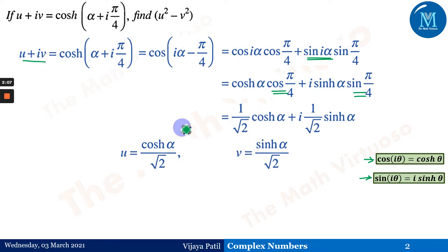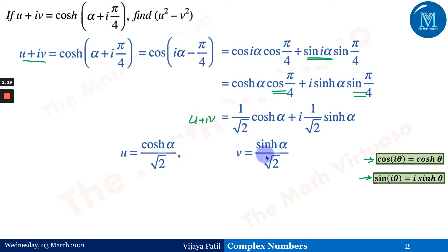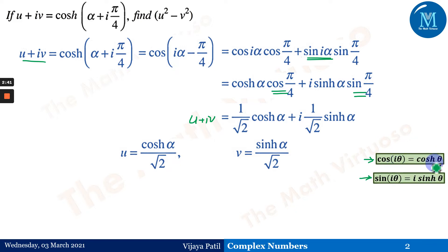We now have u + iv expressed in terms of hyperbolic functions. Equating real and imaginary parts of the two complex numbers: u = cosh(α)/√2 and v = sinh(α)/√2. This completes the separation of real and imaginary parts using hyperbolic function relationships.